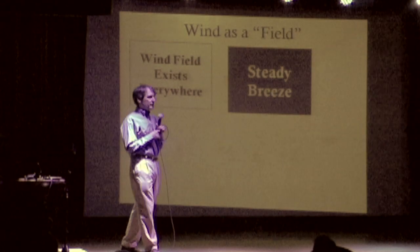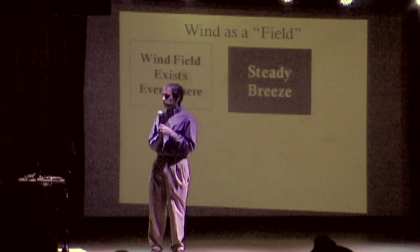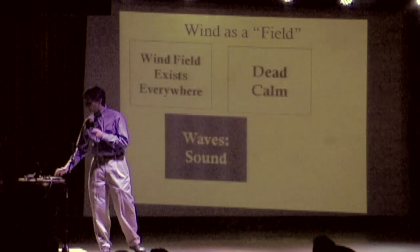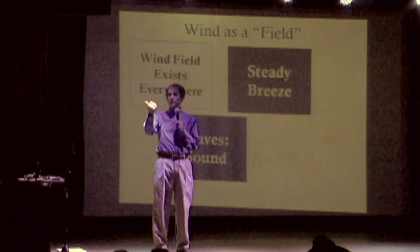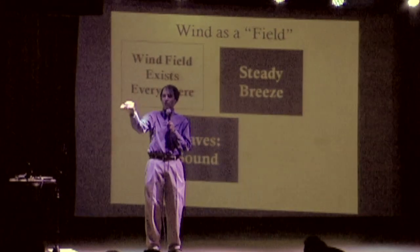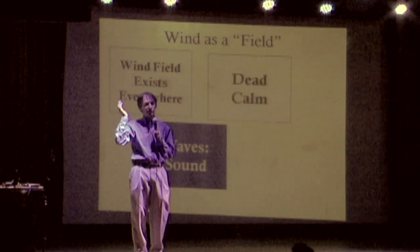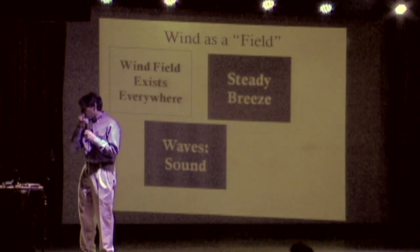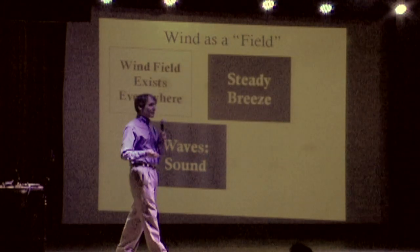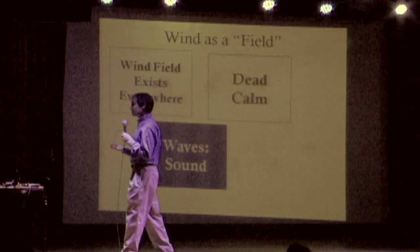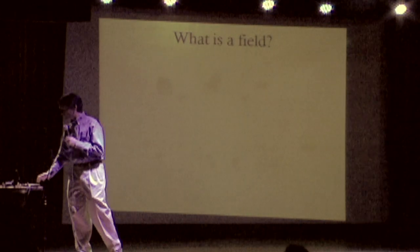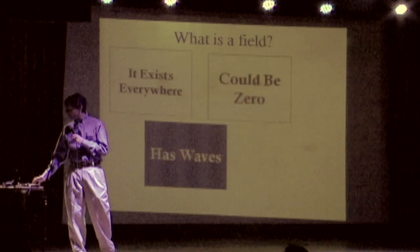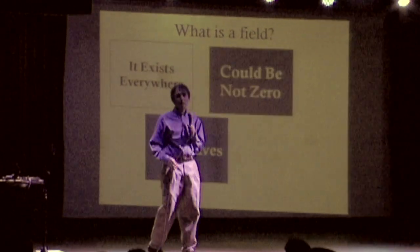Now there's one other thing that's going on with the wind in this room that's really interesting. And you know it because you can hear it. The wind has waves and those waves are sound. The wind is this way and this way and this way and this way all the time. And those waves are propagating out to your ear and making your eardrums flap and your brain is interpreting that as sound. At least I hope so. So this is basically what a field is. It's something which exists everywhere. It can be zero or not zero on average. But it also has waves. Pretty simple idea.